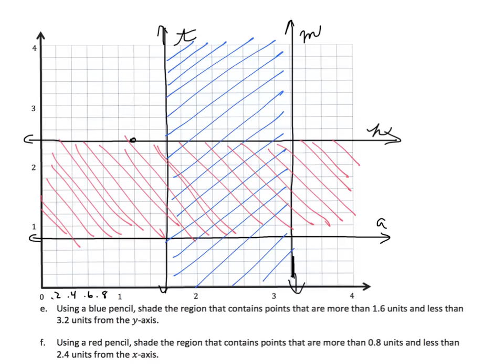With the blue pencil, shade the region containing points that are more than 1 and 6 tenths units and less than 3 and 2 tenths units from the y-axis. Line T is at 1 and 6 tenths, so we shade the area between T and M blue. With the red pencil, shade points more than 8 tenths and less than 2 and 4 tenths units from the x-axis — that's between lines A and H. Lines A and H are parallel to the x-axis, and their y-coordinates are their distance. We now have an area that is double-shaded.